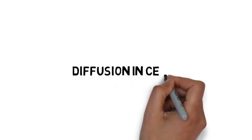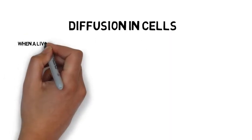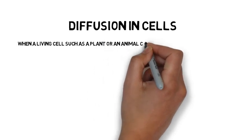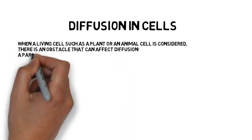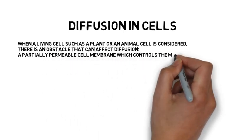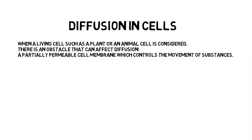Diffusion in cells. When a living cell such as a plant or an animal cell is considered, there is an obstacle that can affect diffusion: a partially permeable cell membrane which controls the movement of substances.